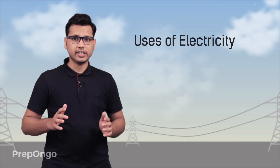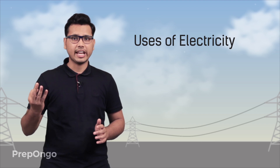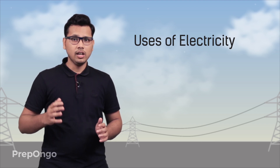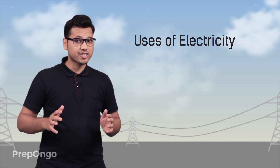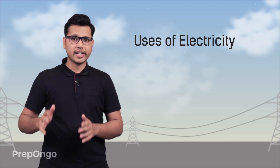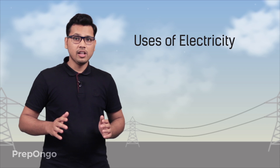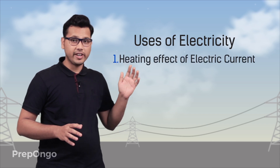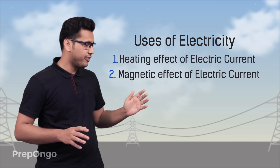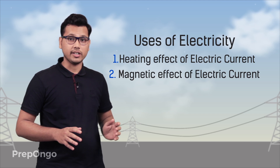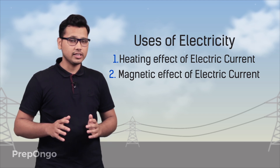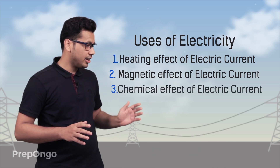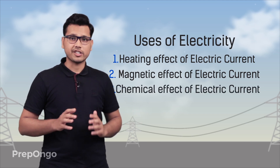Now broadly we can categorize the uses of electricity into three categories, based on different effects shown by electric current. First is the heating effect of electric current. Next is the magnetic effect of electric current. And the last is the chemical effect of electric current.